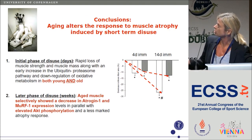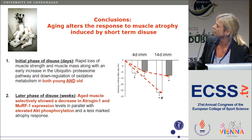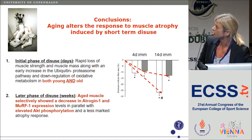To conclude on atrophy: in the initial phase of disuse, we see a rapid loss in muscle strength and muscle mass along with an early increase in the ubiquitin proteasome pathway and a down-regulation of oxidative metabolism in both young and old. In the later phase, aged muscles selectively showed a decrease in atrogen and MuRF expression, an elevated ACT phosphorylation, and a less marked atrophy response.